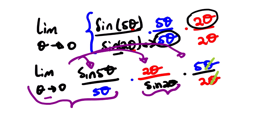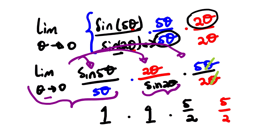So we can safely say this equals one multiplied by one multiplied by five over two. One times one times five over two gives us five over two. That is our answer to this question.